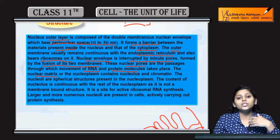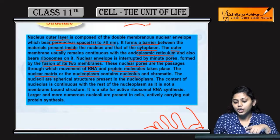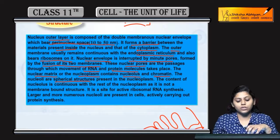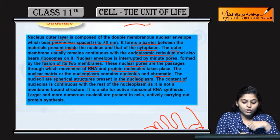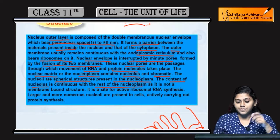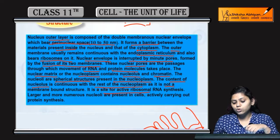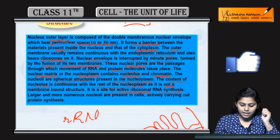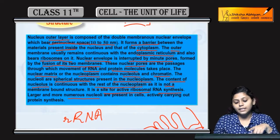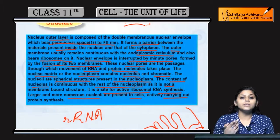Nuclear matrix jo present hota hai, jise nucleoplasm bhi bolte hain, that contains nucleolus and chromatin. Jo nucleoli hain, they are spherical structures present in nucleoplasm. Content of nucleolus is continuous with the rest of nucleoplasm as it is not a membrane-bound structure. It is a site for active ribosomal RNA synthesis — rRNA ki synthesis karta hai. Larger and more numerous nucleoli are present in cells that actively carry out protein synthesis.